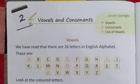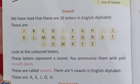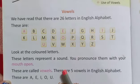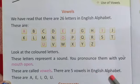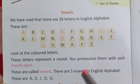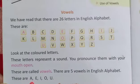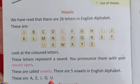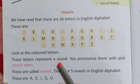Now we will come to vowels. What are vowels? Vowels kya hote hain? There are 5 vowels in English alphabets. How many vowels? 5 vowels hote hain. These are A, E, I, O, U. These 5 vowels — these letters represent a sound.